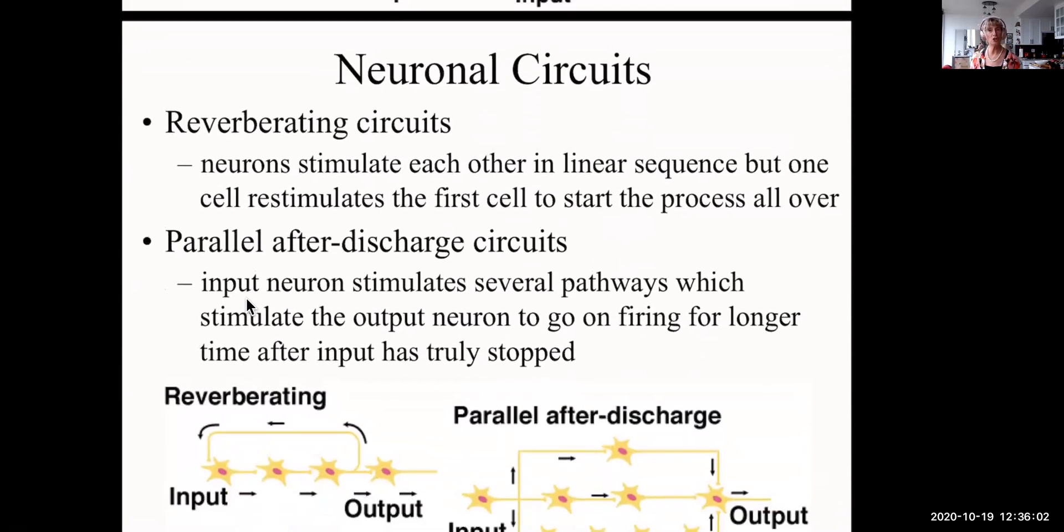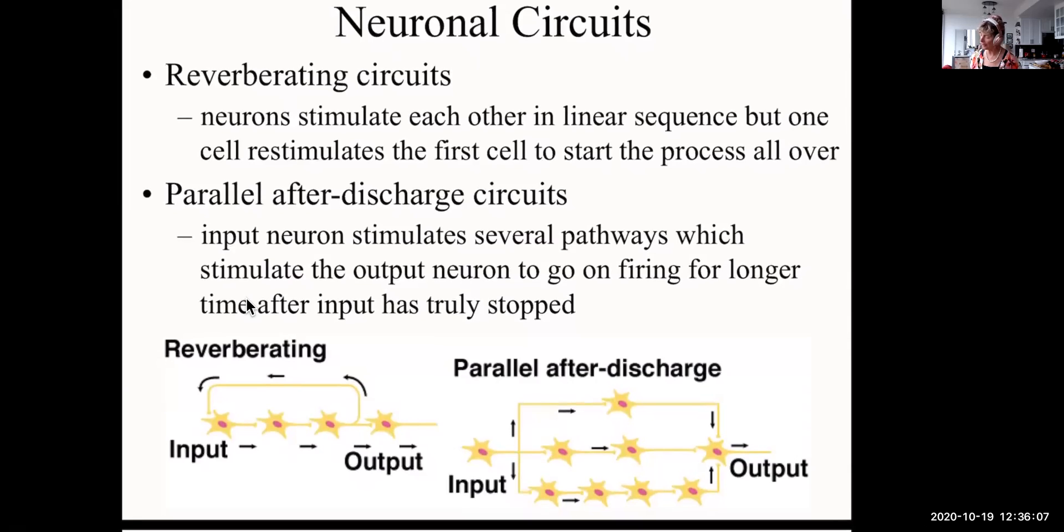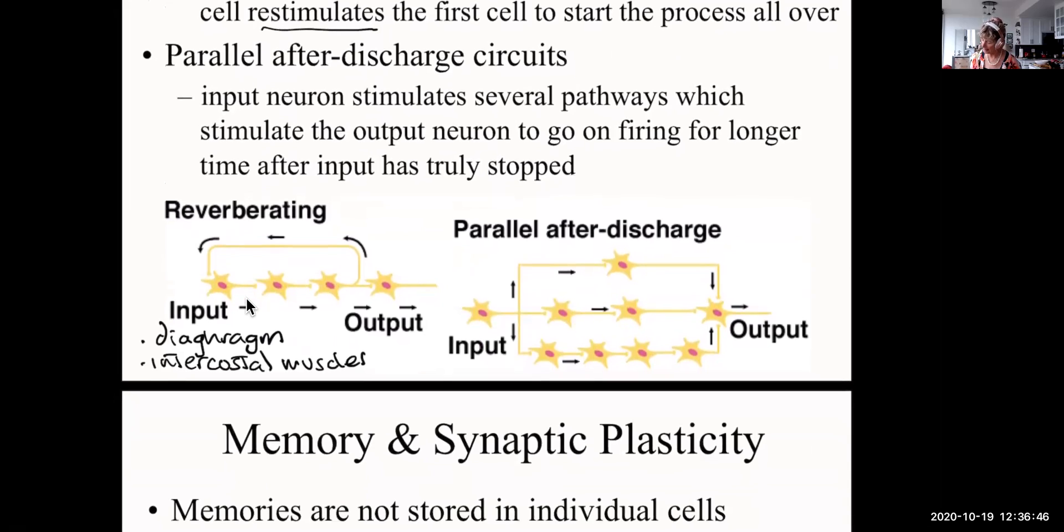There are circuits known as reverberating circuits, where neurons stimulate each other in a linear sequence. But one cell re-stimulates the first cell and starts the process all over. A reverberating circuit. There's a prolonged effect. This kind of circuit is found, for example, in breathing. This is repetitive movement or some kind of repetitive action. When the circuit stops, you exhale. When the circuit starts, you inhale.